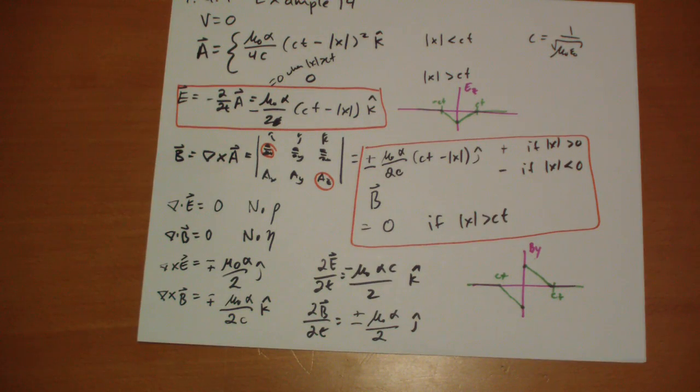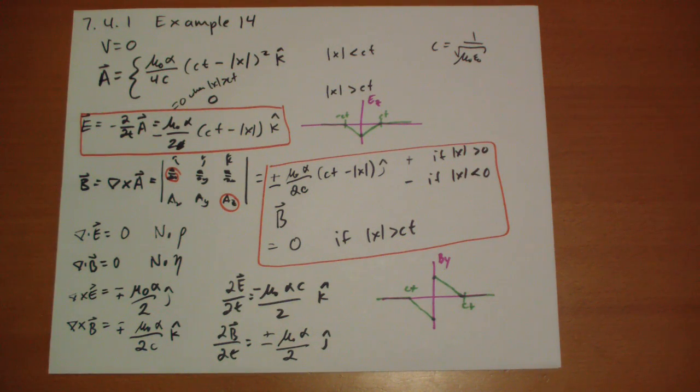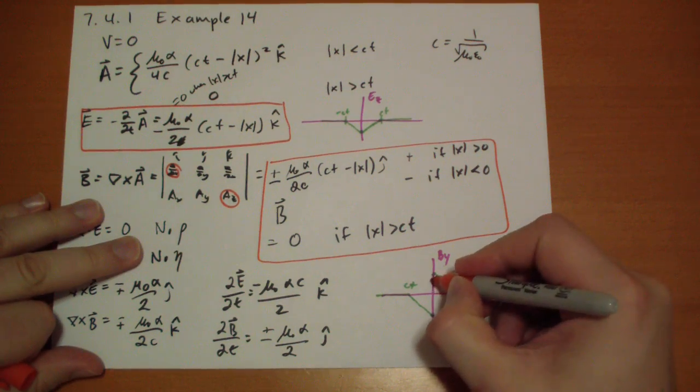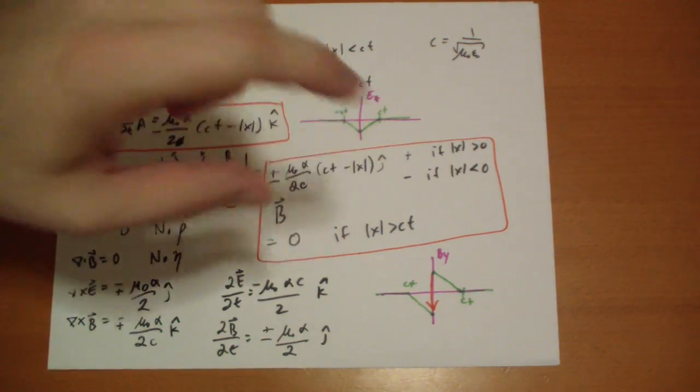Now we learned from the boundary conditions that when we have a discontinuous B field, it's because of a surface current. In this case, the surface current has to be traveling. The surface current across the normal of the plane will give you the discontinuity in B. And the discontinuity in B is this right here.